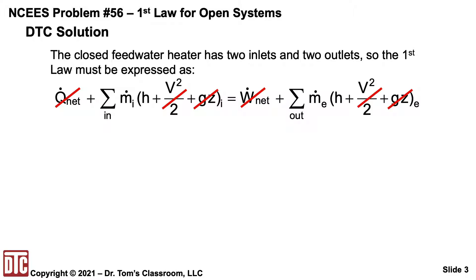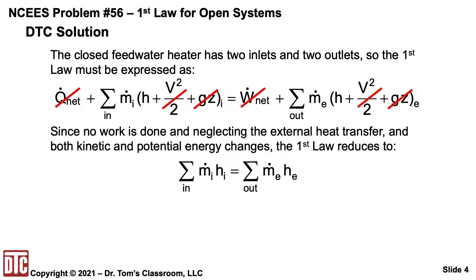The closed feed water heater has two inlets and two outlets, so the first law has to be expressed accordingly. We're neglecting the heat transfer to and from the surroundings — of course, there is heat transfer happening between the two fluids, but the major concern is not heat transfer to or from the surroundings. There's no work in or work out, and we're neglecting kinetic and potential energy changes. So this equation reduces to our familiar sum of M-dot H-in equals the sum of M-dot H at exit.